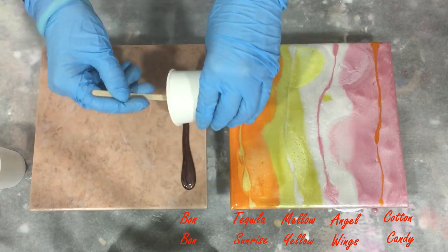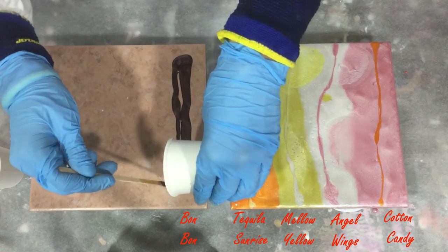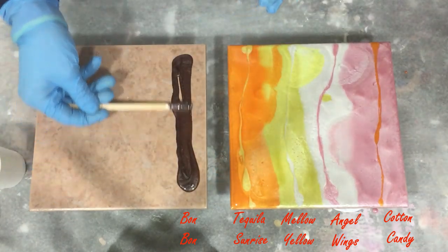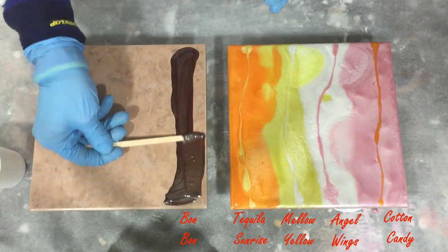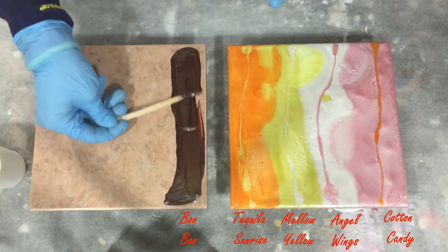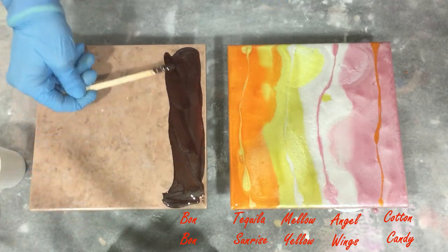The next color is a nice chocolate brown color, that's why it's called Bonbon, after the nice chocolates. I thought that would be a great name for this color.